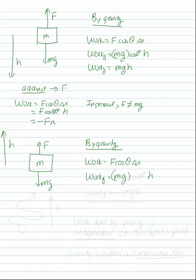It moves h, but the angle is 180 degrees. Mg points down, h is up. They are 180 degrees opposite. So the work done by gravity is negative M G H.